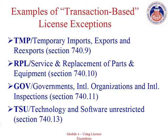Examples of transactions that may be covered by TMP include temporary exports for exhibition and demonstration, and the return of unwanted foreign origin items. License exception RPL may be available in certain circumstances relating to servicing, repair, and replacement. Examples of transactions that may be covered by RPL include the export of one-for-one replacement parts for equipment that's been previously exported legally. Each of these transaction-based license exceptions have unique terms and conditions that must be complied with, and it's important to review them before relying on a license exception.